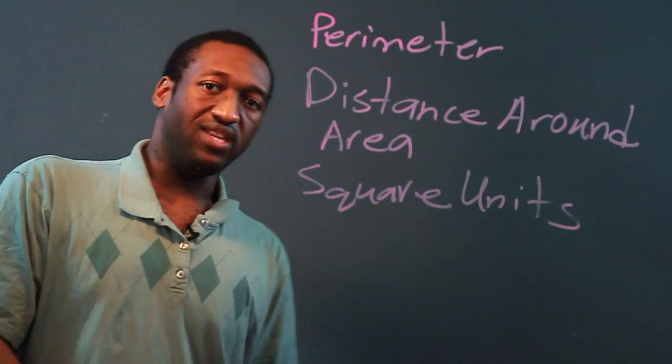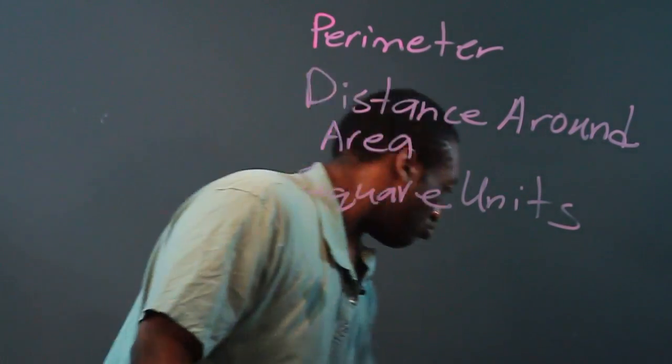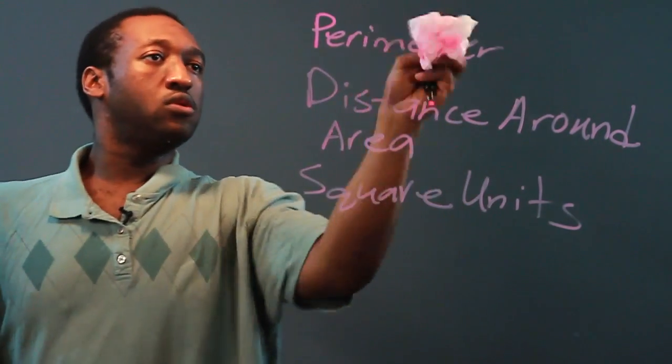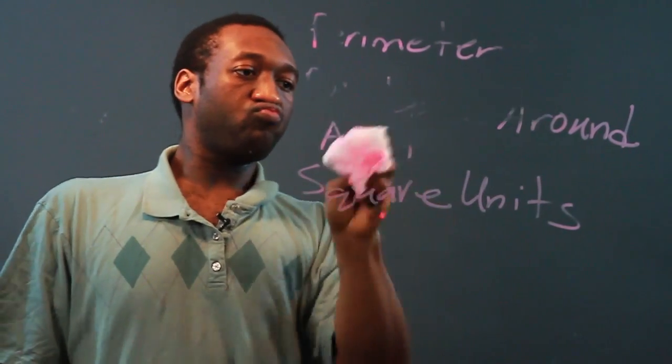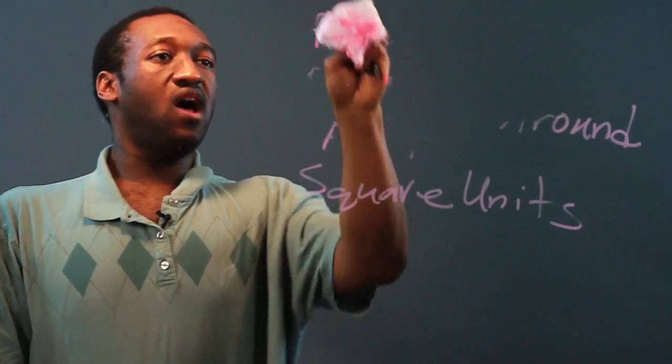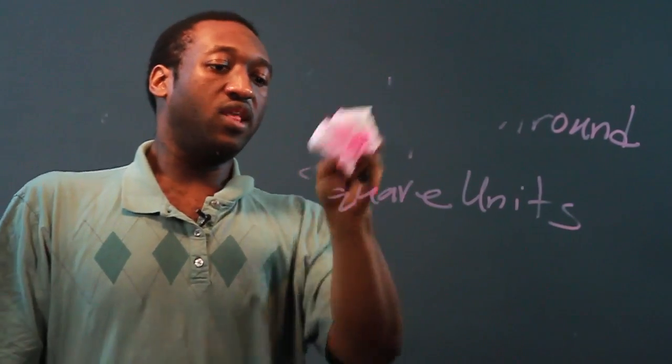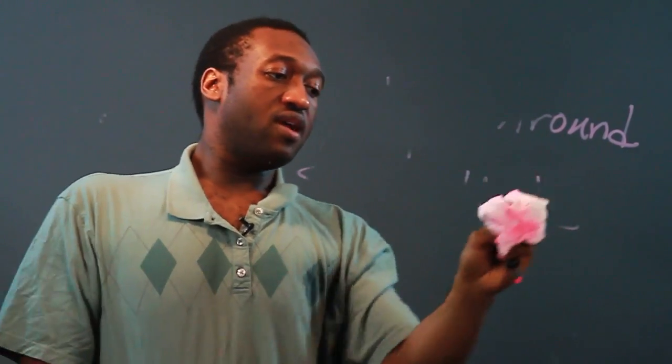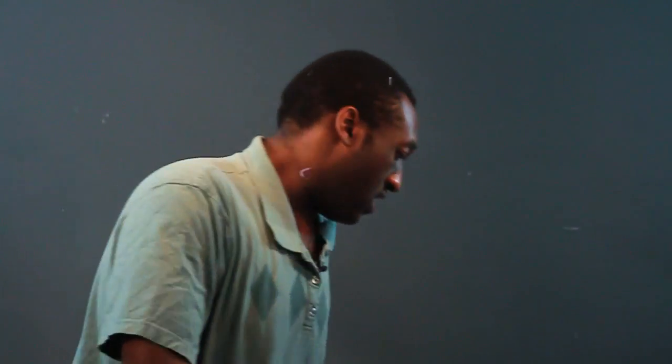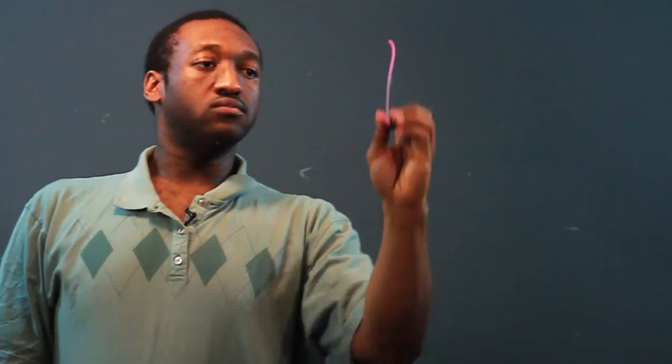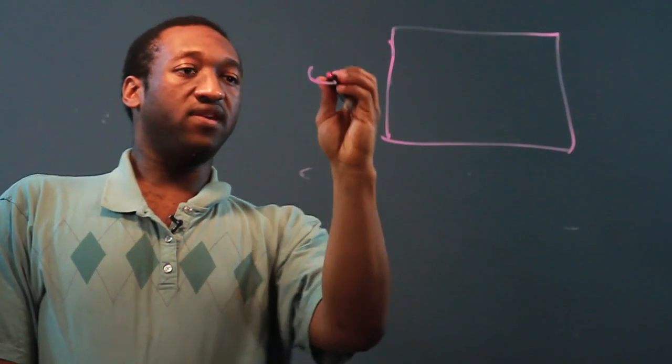So let's look at an example. Let's say Tom has a garden, and the width of the garden is 4 feet and the length is 5 feet.